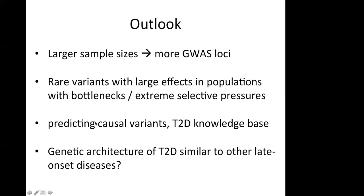Another important direction is to predict causal variants using functional tests and annotations. The authors of the review paper suggest that a type 2 diabetes knowledge base would be very helpful to connect researchers. A big open question for us is: in how far does the genetic architecture of type 2 diabetes resemble other late-onset diseases like epilepsy? Are there any questions?